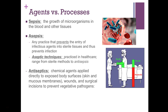These next three terms can be confusing: sepsis, asepsis, and antisepsis. Sepsis is when we have growth of microorganisms in the blood or other tissue — bacteria entering the bloodstream. Asepsis is the practice of preventing the entry of infectious agents into sterile tissues, thus preventing infection. The 'A' prefix means 'without,' so asepsis means without growth of microorganisms in blood and other tissues.